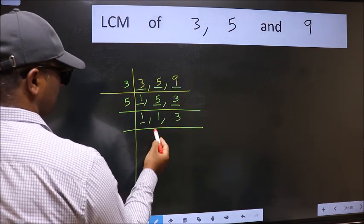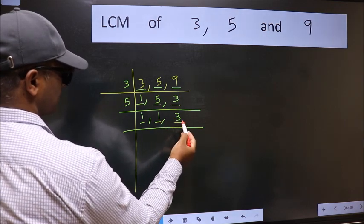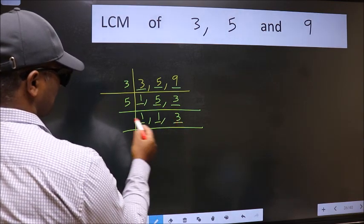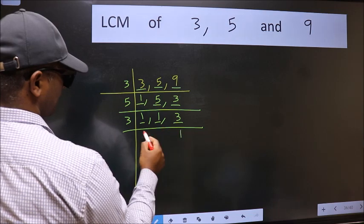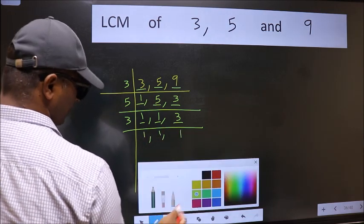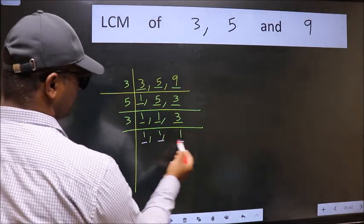Now we got 1 here and here so focus on the next number 3. 3 is a prime number so 3 goes into 3. So we got 1 in all the 3 places.